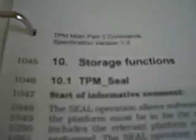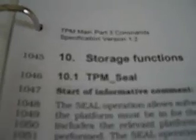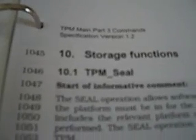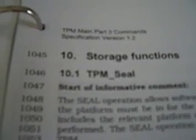For example, the function called TPM Seal is used to encrypt data with a key that is held by the TPM. The calling software supplies the data to be encrypted and specifies the TPM key to be used. In return, the calling software receives a data blob, which is the encryption of the original data. Later, some other software can request decryption by supplying the blob and again specifying the key.